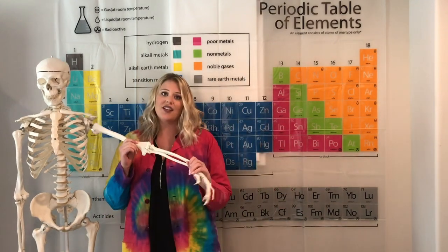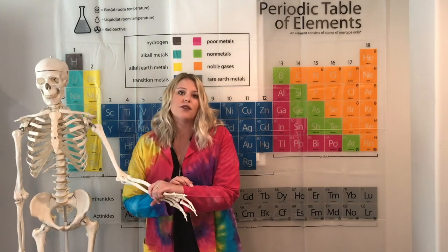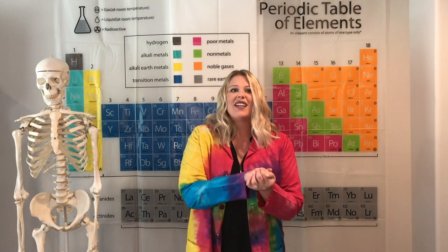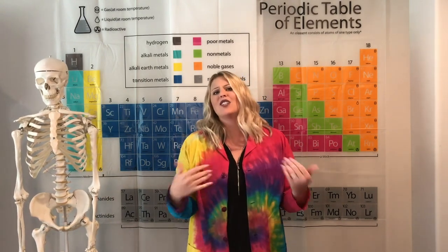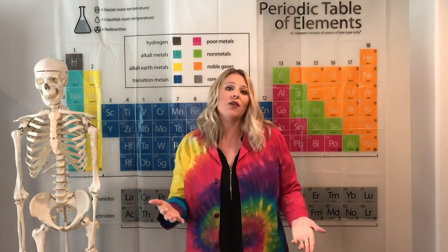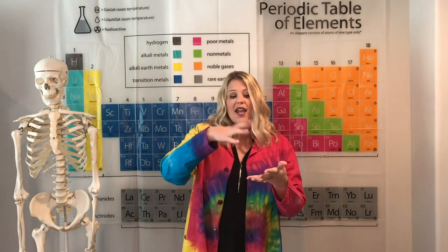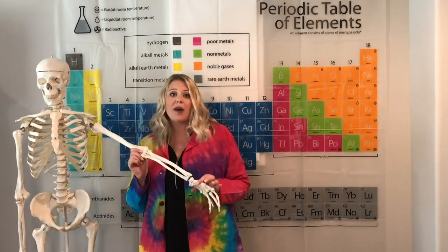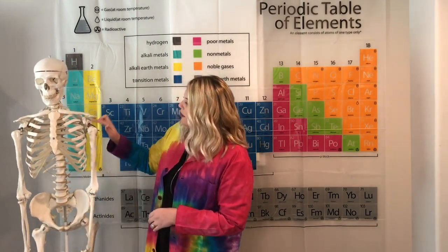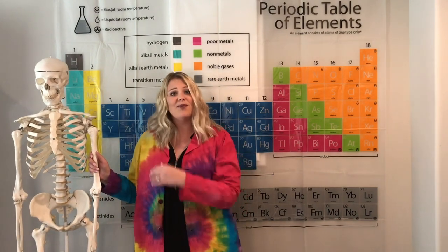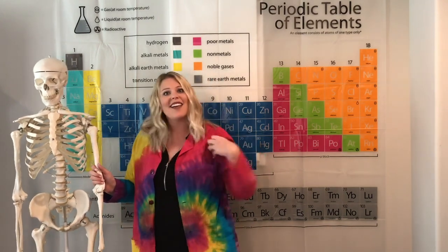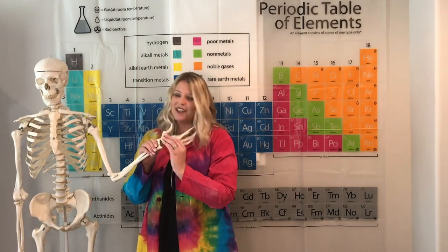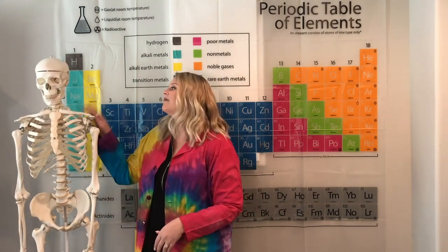Our bones are made of calcium — really hard minerals. Fred's are made of plastic; these are just molds. Think of cookie cutouts or an ice cube tray — Fred was created from a mold of a human body. You'll see different screws and metal parts representing his joints, areas where he can move. Fred's shoulder can move just like ours, his wrist can move just like ours. Fred will be with us during all of our videos this year.